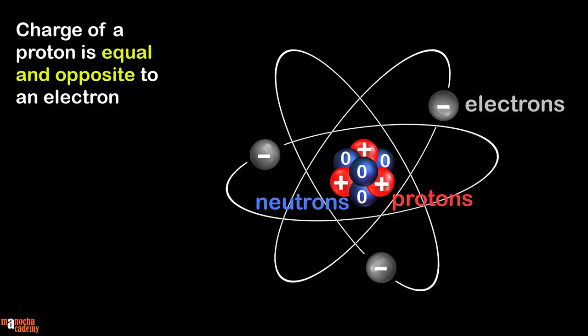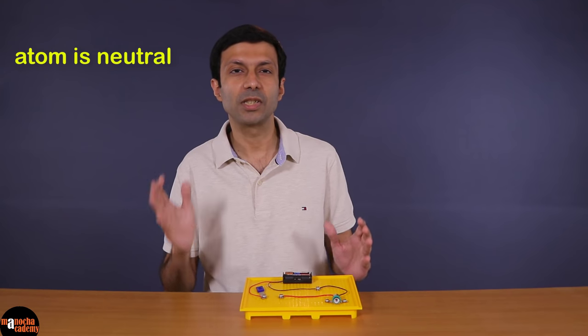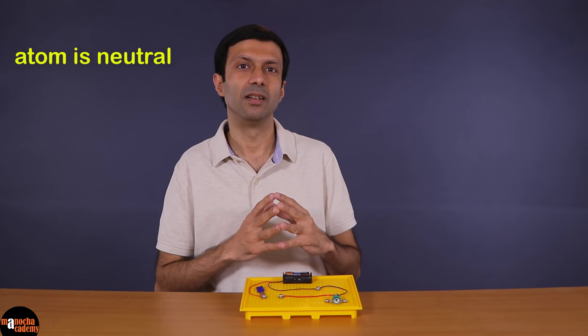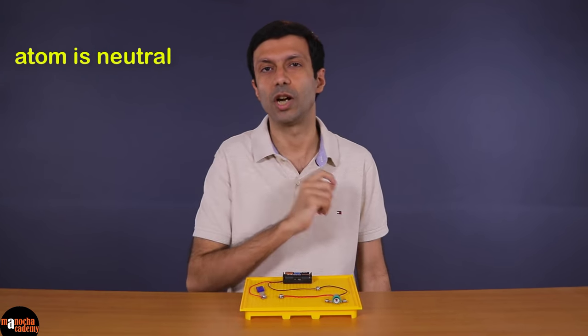Now, the charge of a proton is equal and opposite to that of an electron. So, an atom is neutral since it contains an equal number of protons and electrons. The positive and negative charges cancel each other, and the atom itself has no charge.